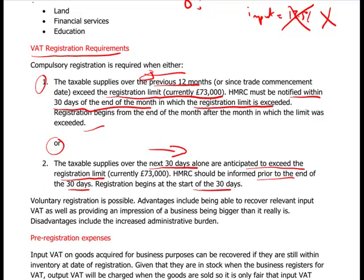Voluntary registration is also possible. Why would you do this? It means you can recover input VAT, as well as providing an impression of a business being bigger than it really is. If you're charging VAT and your turnover is only £40,000, adding VAT makes everyone think your turnover must be at least £73,000. As long as your customers are VAT registered, there's no difference for them — they can recover the VAT you charge. But if they are not VAT registered, it's a big consideration: something that costs £100 will now cost £120, and customers might go elsewhere.